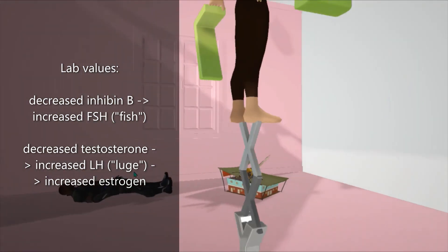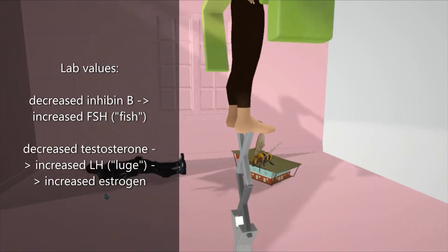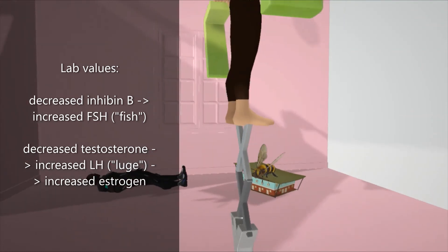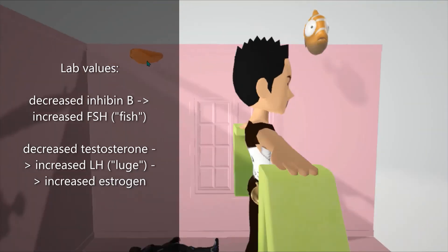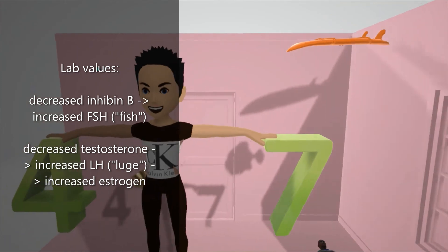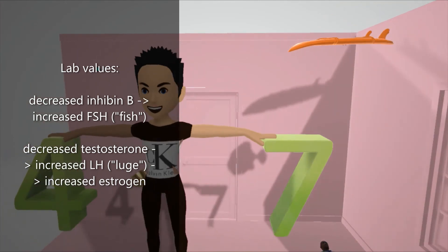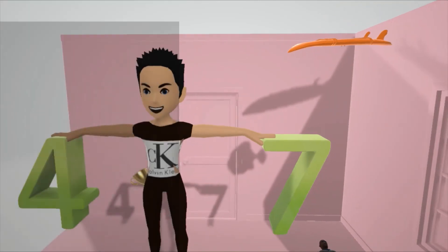The testosterone character is also on the floor, representing decreased testosterone due to abnormal Leydig cell function. This leads to an increase in LH — luteinizing hormone — represented by a luge in midair, which also leads to an increase in estrogen.